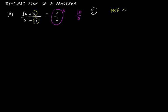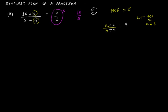If any fraction a by b is given, and you find the highest common factor of a and b — let's say it is c — then if you divide both a and b by c and get e by f, then e by f will be the simplest form of the fraction a by b.